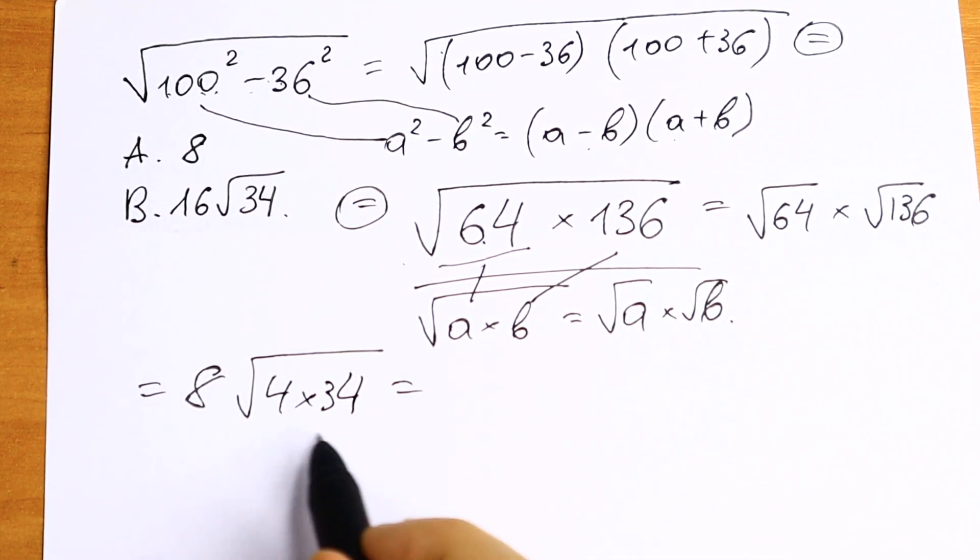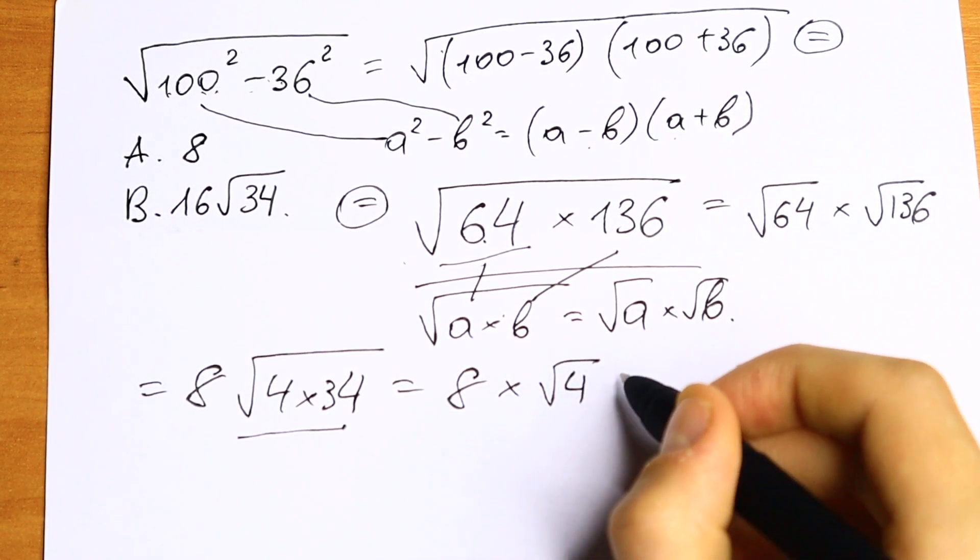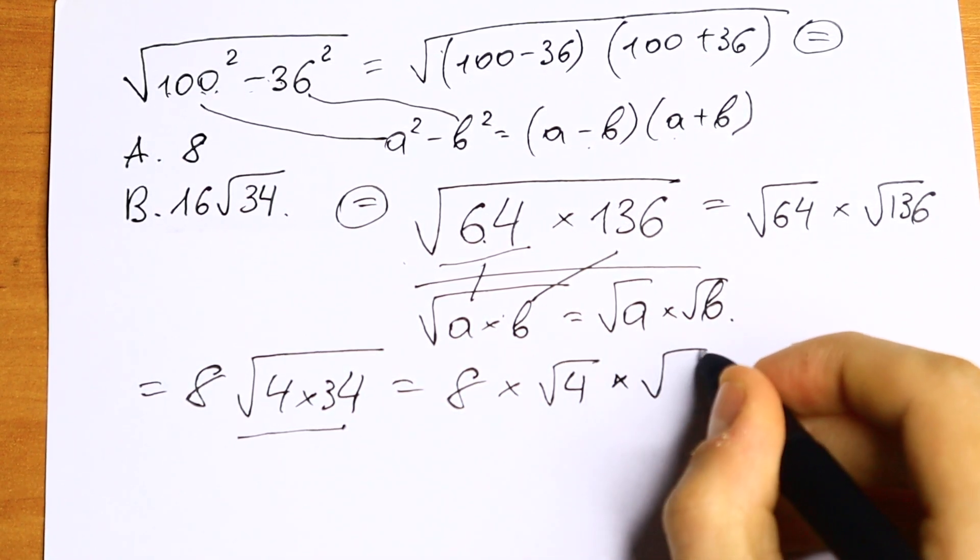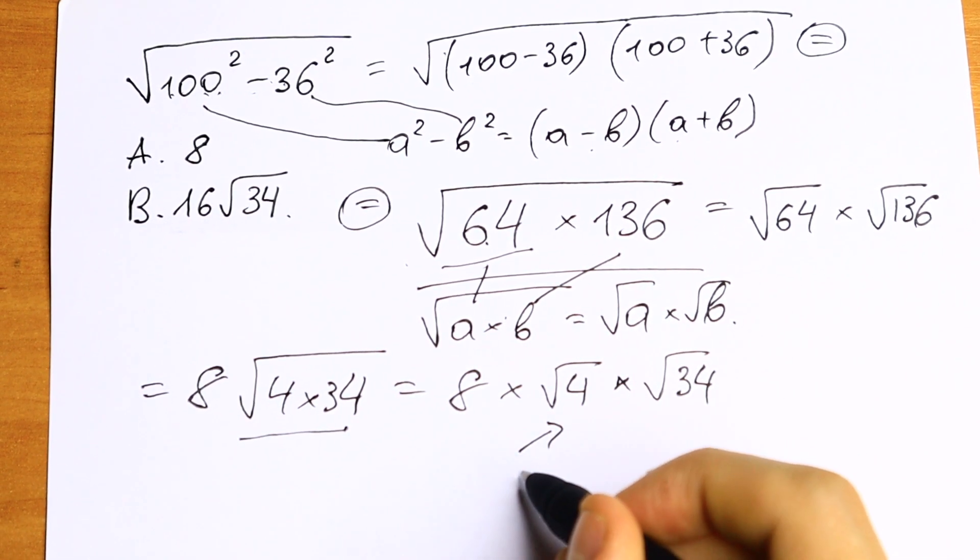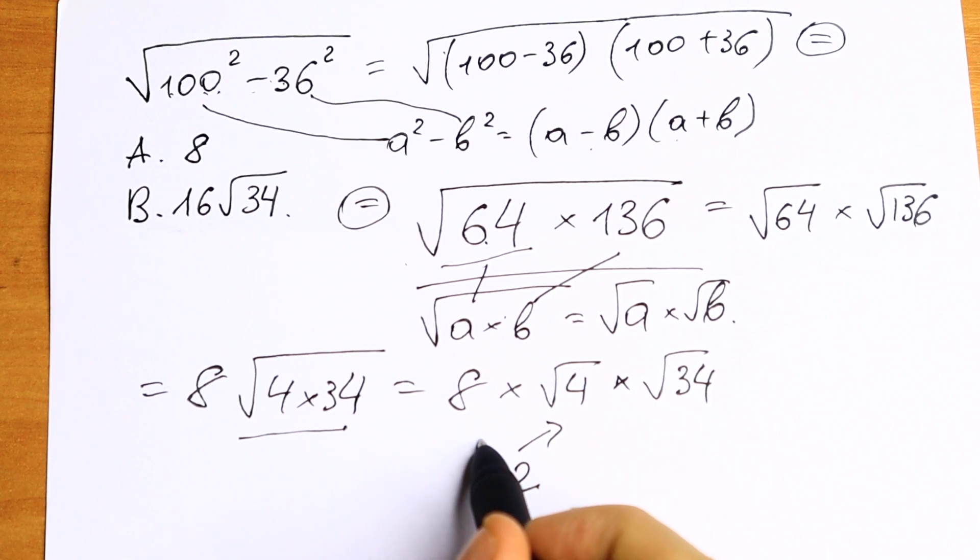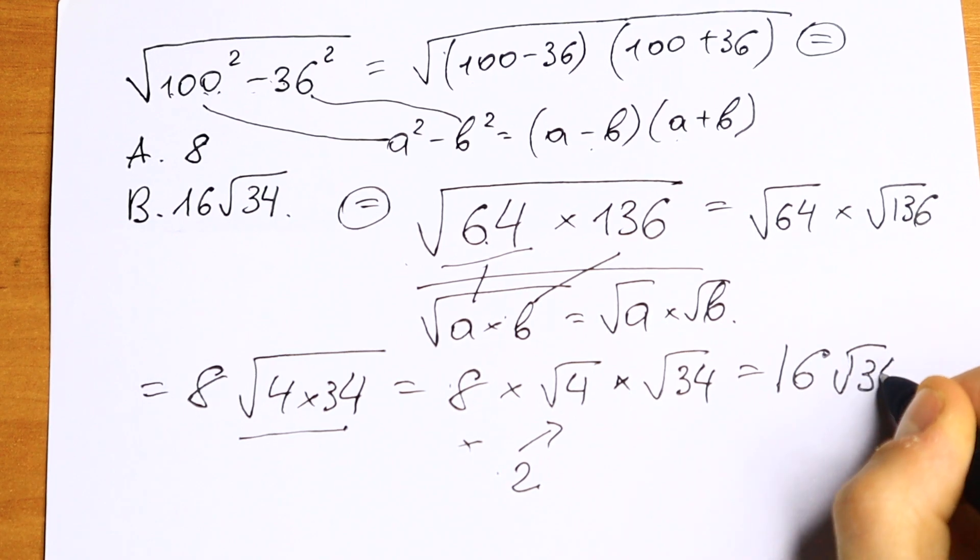If we use this rule once more right here, we will have 8 times square root of 4 times square root of 34. From here, square root of 4 equals 2. And if we multiply this by 8 we will have 16, 16 square root of 34.